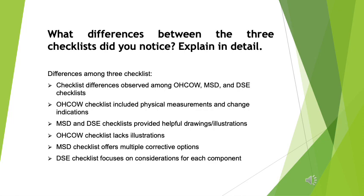Another difference is that the MSD checklist provided several corrective options for the user to fix the problem. The DSE checklist did not have this but indicated things to consider per component, which were less detailed compared to the MSD checklist. The OCO checklist provided actions to be taken similar to the MSD checklist, but these are not easily visible in the checklist. The OCO checklist also did not include the temperature component, while the MSD and DSE checklists did. Of the three, only the OCO checklist included noise level and software considerations, as well as taking breaks, listed under the job variety component.